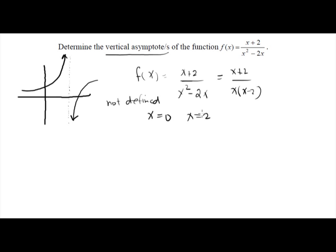These values are not defined — they cannot have a value in the graph — and these are the candidates for a vertical asymptote. In this example, x = 0 and x = 2 are the values where we can have the vertical asymptotes, and these are the equations of the vertical asymptotes. You have to write them in x = (number) form, since a vertical asymptote is a line. So the vertical asymptotes are x = 0 and x = 2.